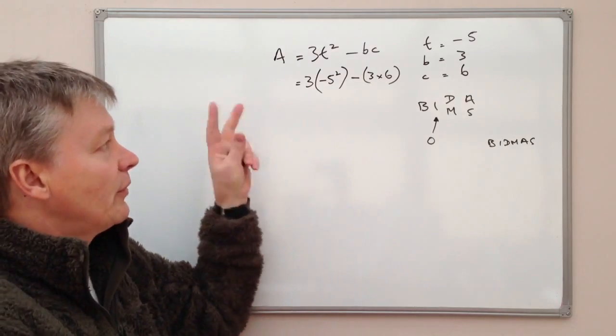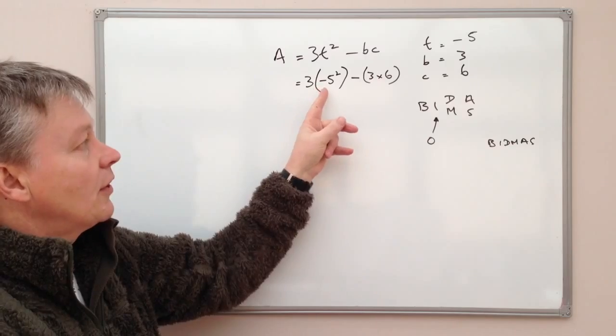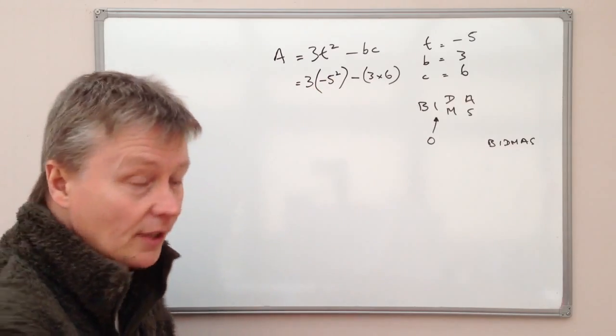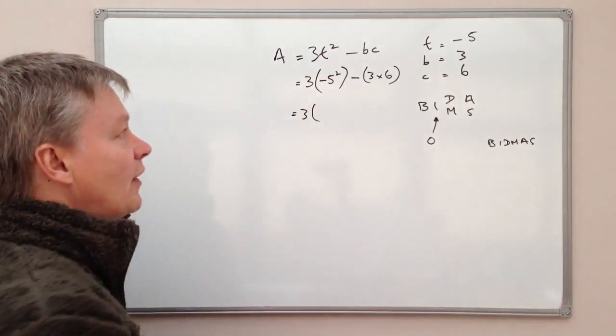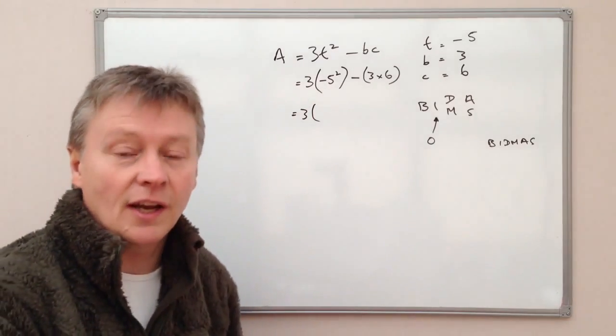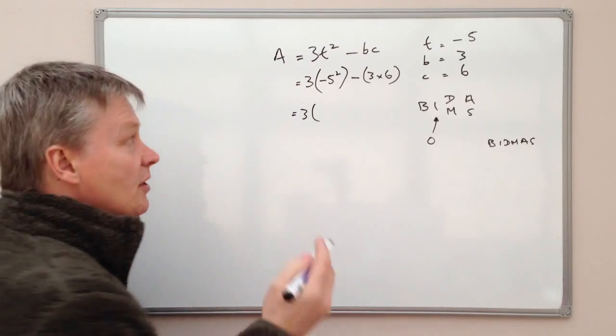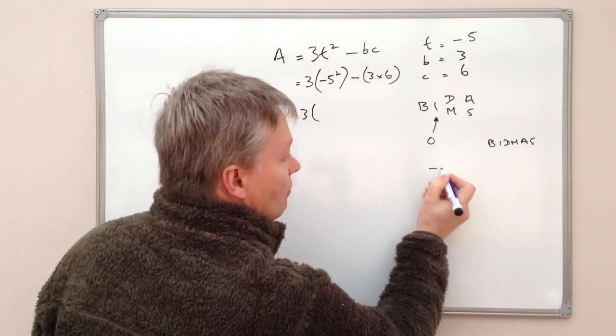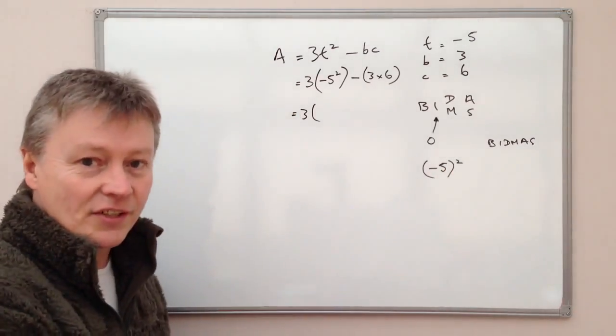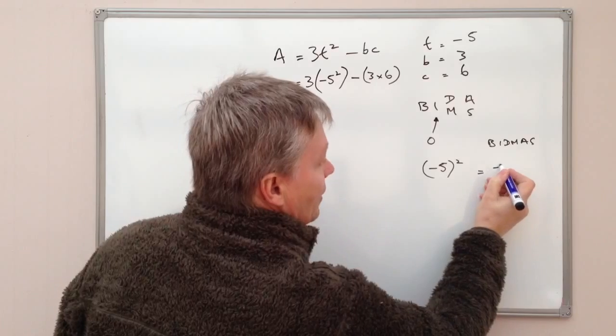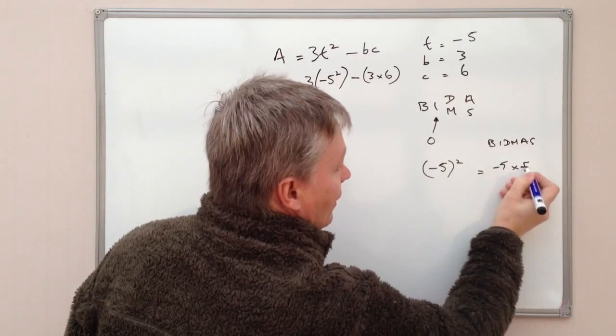Now the most important thing with this particular equation has to be to deal with BIDMAS in its order. So I've got minus 5 squared, so I'm going to do that first. So I've got 3. Now minus 5 squared is the same as saying minus 5 times minus 5. So I'll just write it down here. So I've got minus 5 squared and that's exactly the same as saying minus 5 times minus 5.